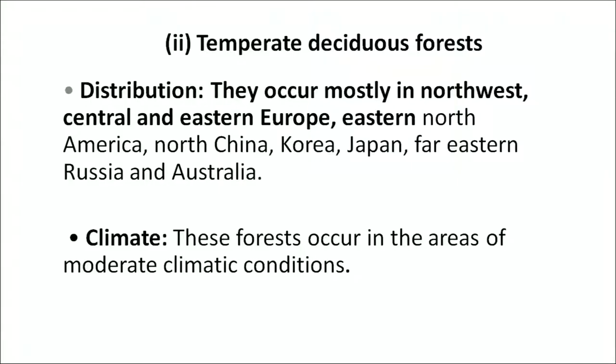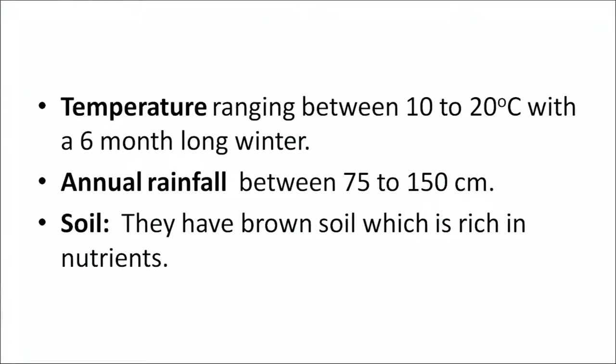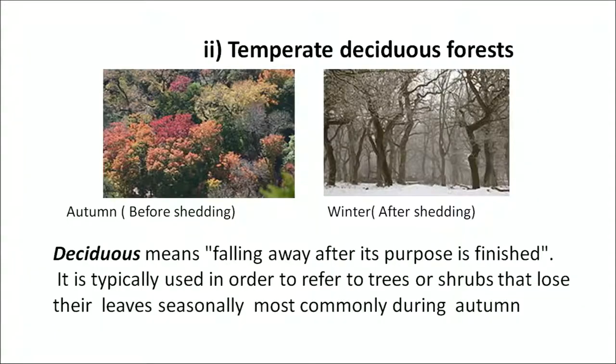Temperate deciduous forests occur mostly in North, West, Central and Eastern Europe, Eastern North America, North China, Korea, Japan, Far Eastern Russia and Australia. The climate has moderate temperature and humidity. Temperature ranges from 10 to 20 degrees with 6 months of long winter. Annual rainfall ranges from 70 to 150 centimeters. The soils are rich in nutrients and brown in color. The word 'deciduous' refers to trees or shrubs that lose their leaves seasonally, most commonly during autumn.